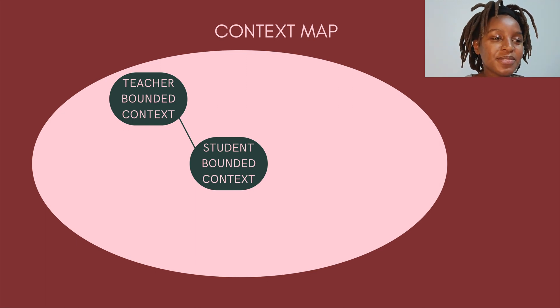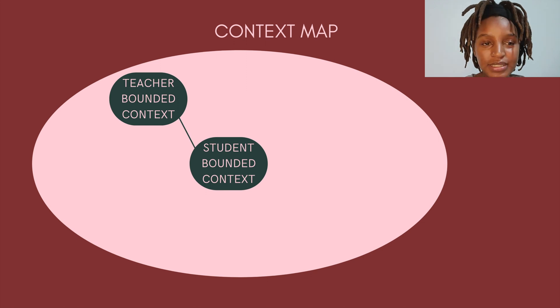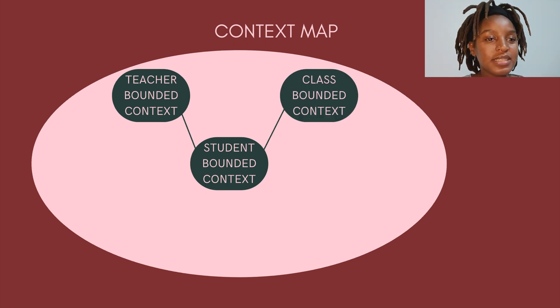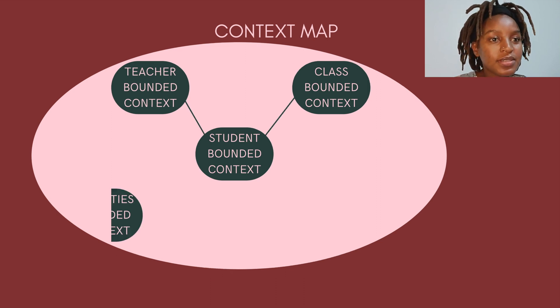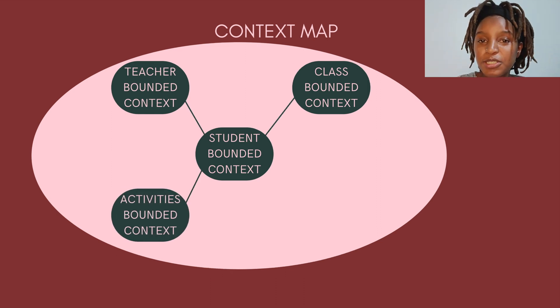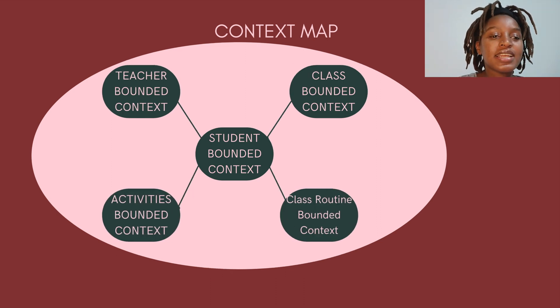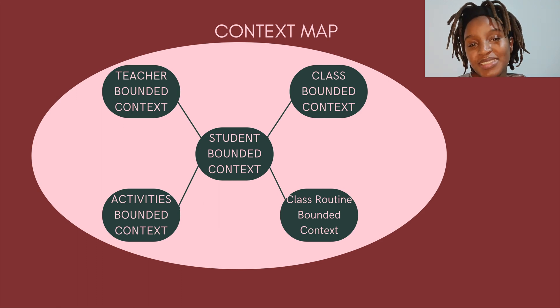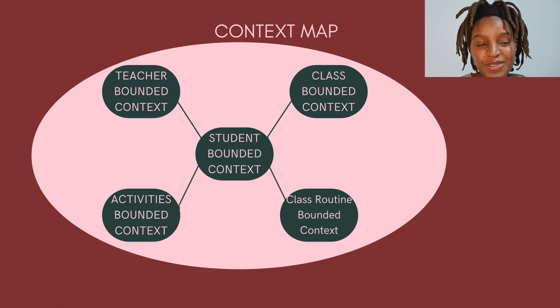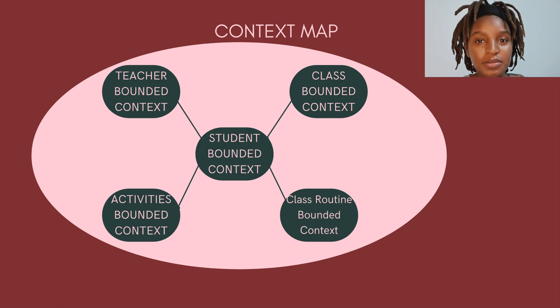We have a student bounded context, and it has a relationship to the teacher bounded context. It also has a relationship to the class bounded context, the activities bounded context, and lastly to the class routine bounded context. You can have as many as you want — name them according to your system and how you've decided to section everything.